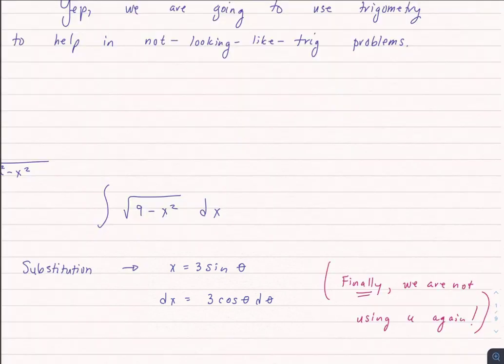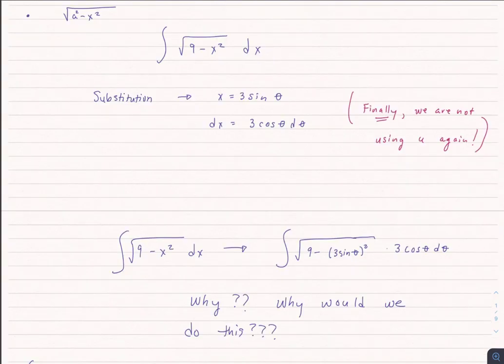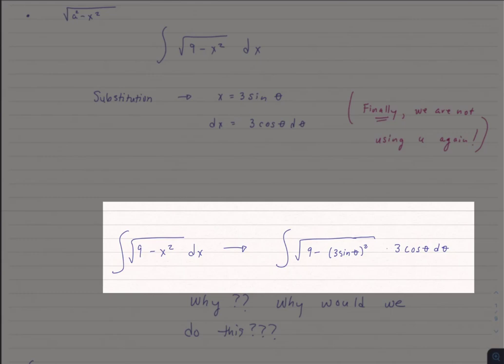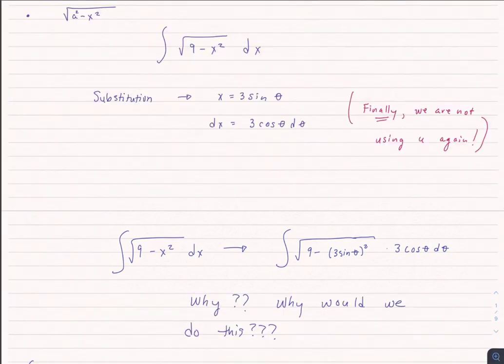If we go ahead and do that, I rewrite the integral of the square root of 9 minus x squared dx as the integral of the square root of 9 minus (3 sine theta) squared, times 3 cosine theta d theta. Why would this make life easier? Well, could we do this with u-substitution? No. We can't split the 9 and the x squared out of that square root, so we can't do this with simple integration or integration by parts.